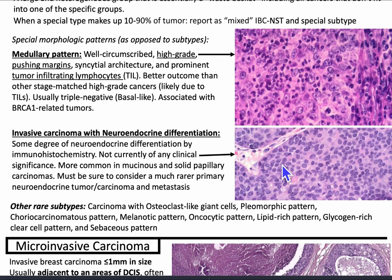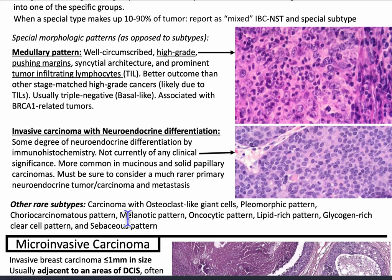Other rare subtypes include carcinoma with osteoclast-like giant cells, pleomorphic pattern, choriocarcinomatous pattern, melanotic pattern, oncocytic pattern, lipid-rich pattern, glycogen-rich clear cell pattern, and sebaceous pattern. I've only seen two of these subtypes and the rest I haven't seen, illustrating just how rare these rare subtypes are.